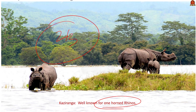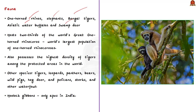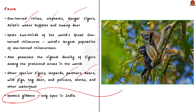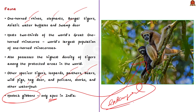In addition to these animals, the park also has tigers, leopards, panthers, bears, wild pigs, hog deer, pelicans, storks, and other waterfowl — a diverse range of animals and birds. When talking about Kaziranga, we should also mention Hoolock gibbons — a very important topic. Hoolock gibbons are the only ape species in India, and according to the IUCN Red List, they are also an endangered species. These Hoolock gibbons are found in Kaziranga, highlighting the significance of this National Park.